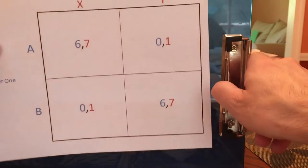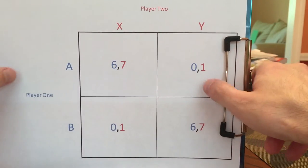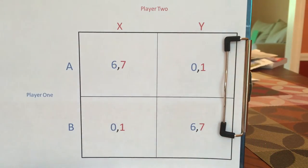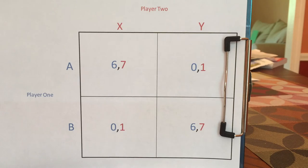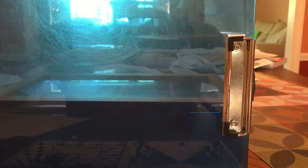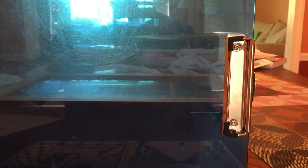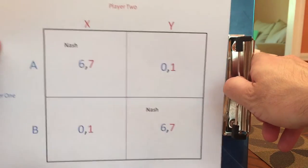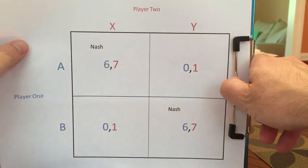Let's do another game. Please pause the video and determine the Nash Equilibrium — there might be more than one. There are two Nash Equilibria in this game: AX and BY.